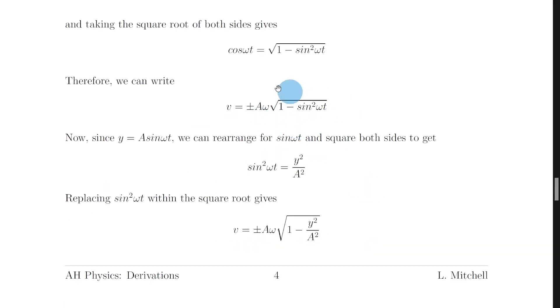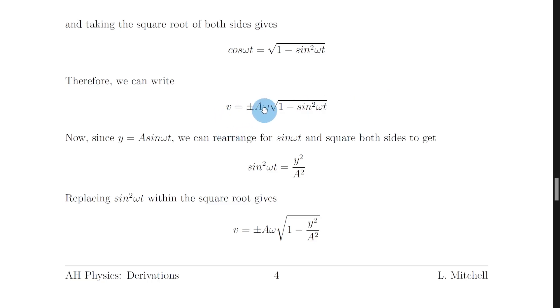We can now replace the cos omega t expression in our velocity equation with the square root of 1 minus sine squared omega t. We have a plus or minus because we've taken square roots, giving v equals plus or minus a omega times the square root of 1 minus sine squared omega t.